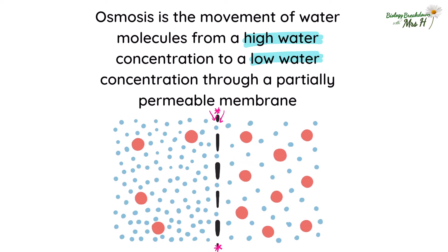The red circles represent a solute — something that's been dissolved in the water. So let's pretend this is glucose. You can see that glucose is too big to pass through the partially permeable membrane.